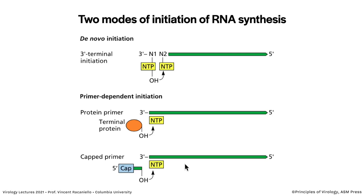There are two ways to initiate RNA synthesis. You can initiate de novo — without a primer — always starting at the three-prime end, just adding an NTP and continuing. In many cases polymerases are primer-dependent. One example is a protein-linked primer. Another example is influenza virus, where a nucleic acid primer with a little cap is used to start synthesis — the RNA primer has a cap on it. Depending on the polymerase, it may or may not need a primer.